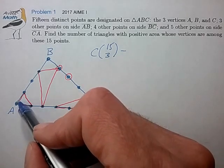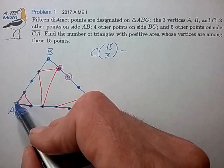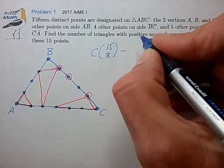So, if we form an invalid triangle of three points from side AB, we can do that in 5 choose 3 ways.